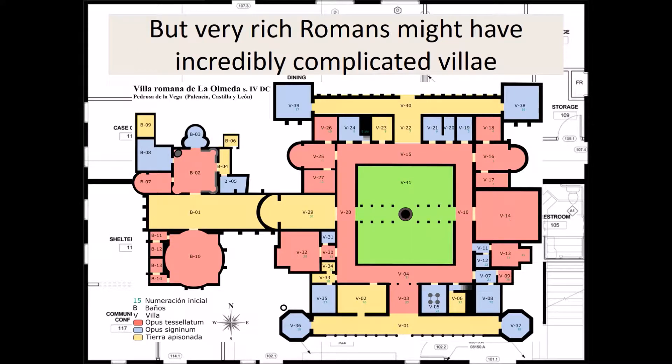Now there were many different types of villa ranging from the villa rustica, your basic country house and farm, all the way to the villa maritima, this very large, incredibly complex villa that was typically located next to the sea.